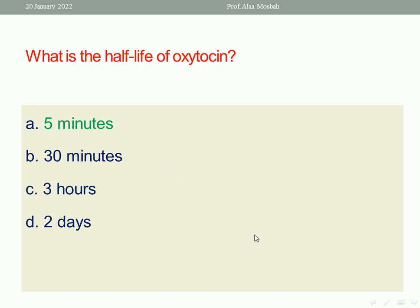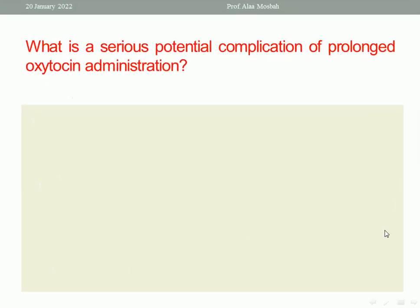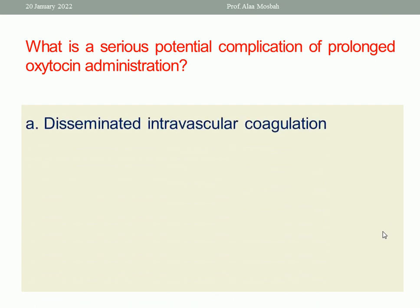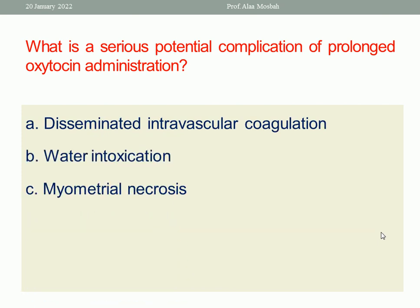Next question: what is the serious potential complication of prolonged oxytocin administration? The options are DIC, water intoxication, myometrial necrosis, and hyperkalemia. The answer is water intoxication. With prolonged use of oxytocin over 24 hours, water intoxication may happen and it is dangerous because it may cause convulsions and coma.